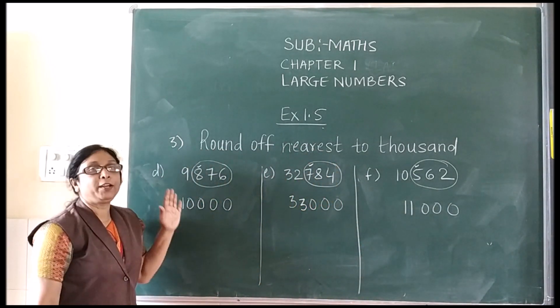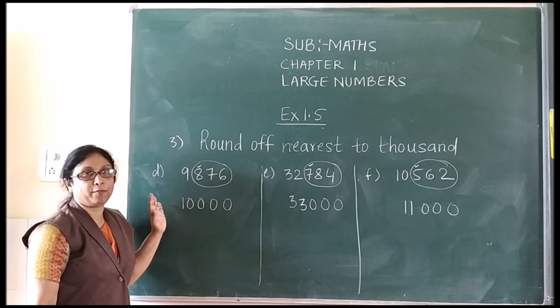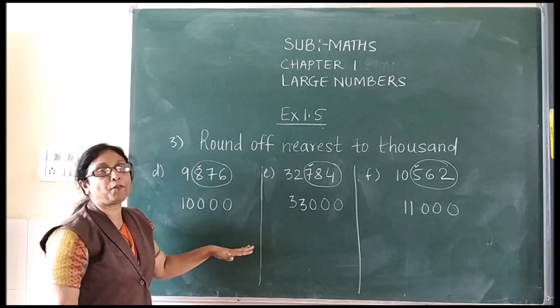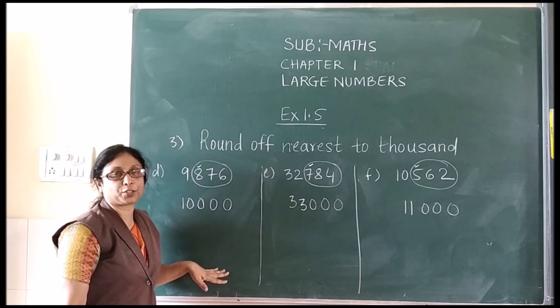To summarize: if the circled digit is 5 or more than 5, add 1 to the outside number. If it is less than 5, write the same digit as it is.